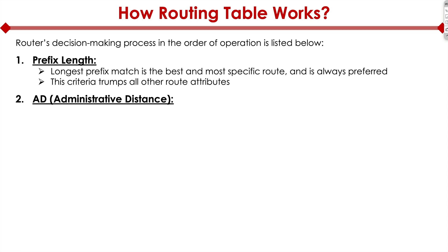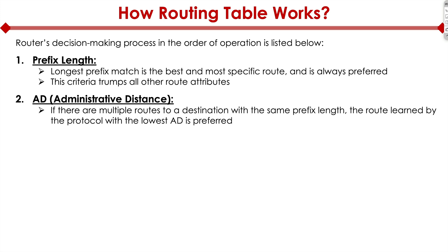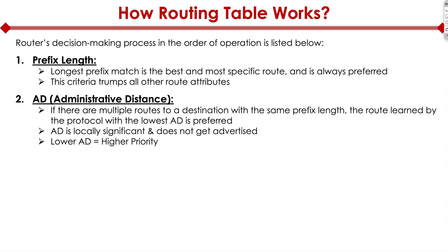The next thing the router looks at, if the prefix length is the same for different routes in our routing table, is administrative distance. If there are multiple routes to a destination with the same prefix length, the route learned by the protocol with the lowest administrative distance is preferred. Administrative distance is locally significant and does not get advertised, and a lower number is considered better — so lower AD equals higher priority.